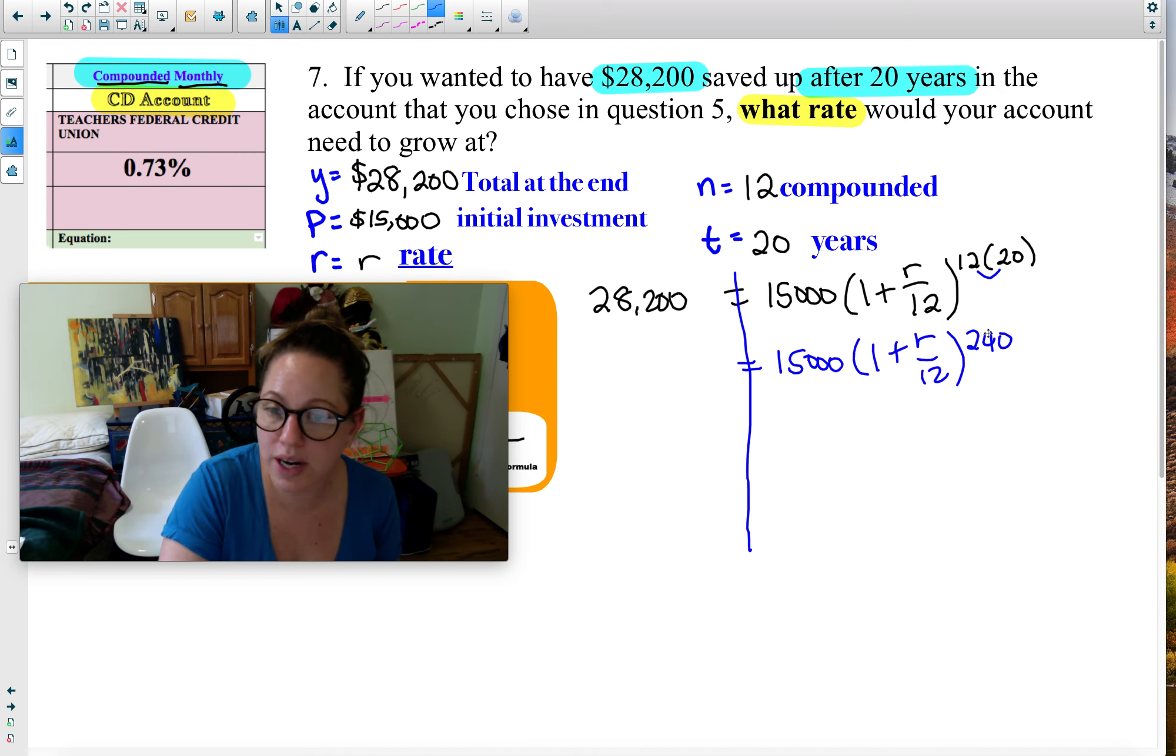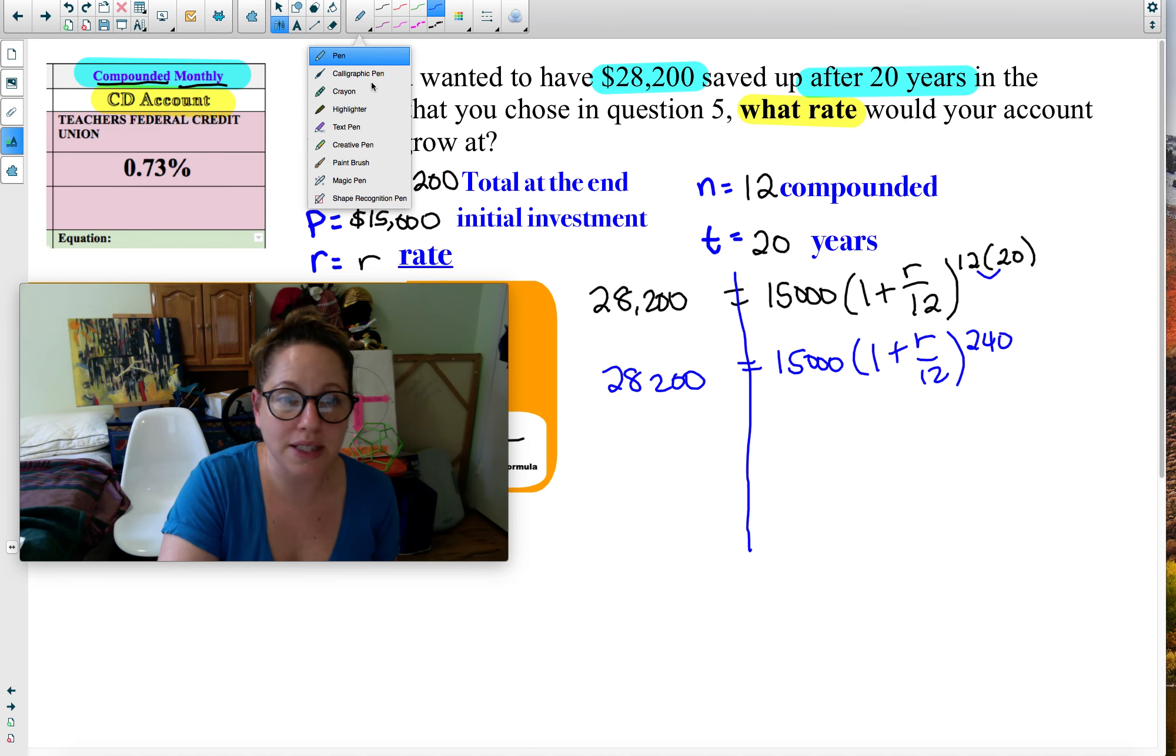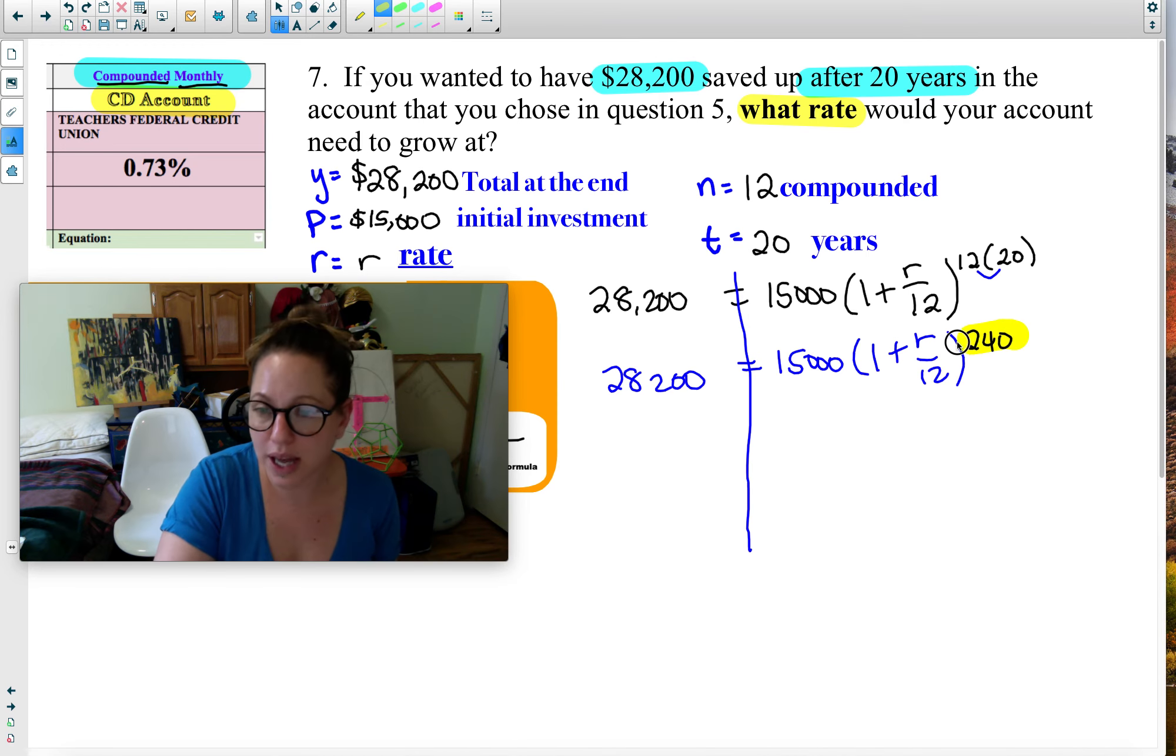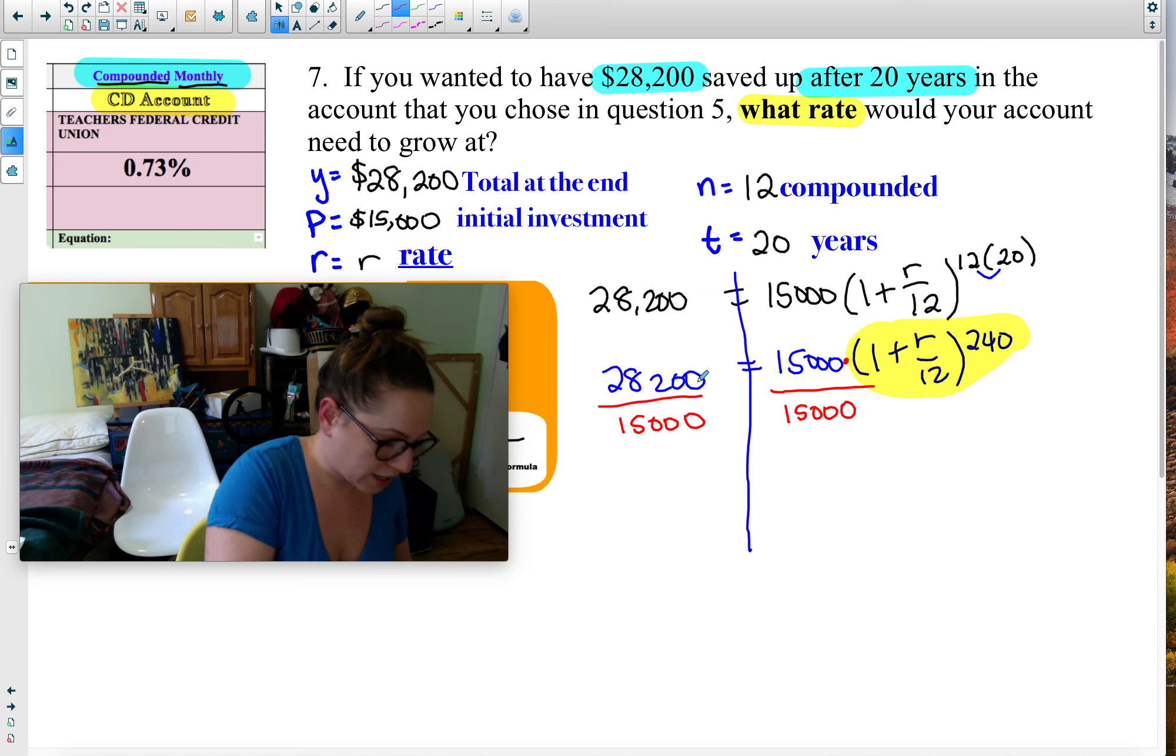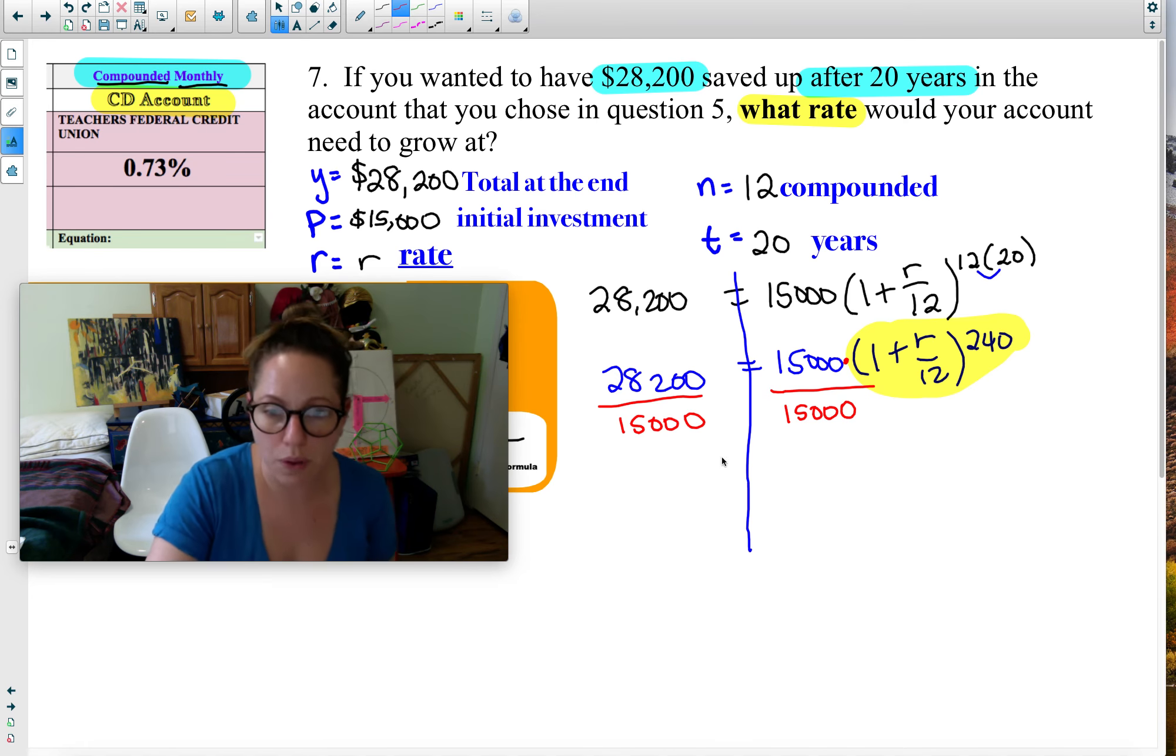Notice that whenever I write an exponent, I write it high and smaller. My goal is to get that base and that exponent by itself. I want to get this by itself, the bottom of the exponent and the exponent. That means I've got to get rid of that 15,000. Because it's being multiplied, I'm going to divide it. That's the opposite of multiplication. And whatever I do to one side, I do to the other.